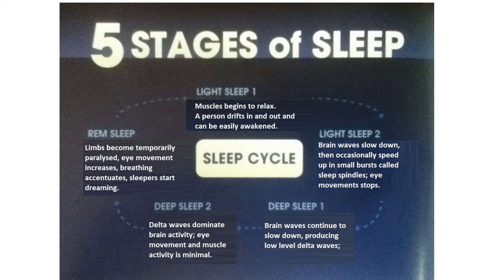Light sleep stage two: brain waves slow down, then occasionally speed up in small bursts called sleep spindles. Eye movement stops and then starts.